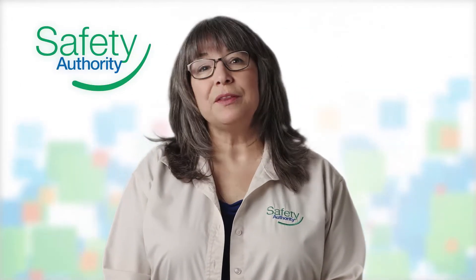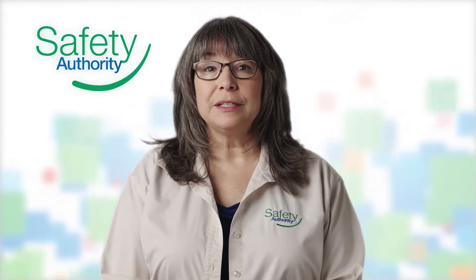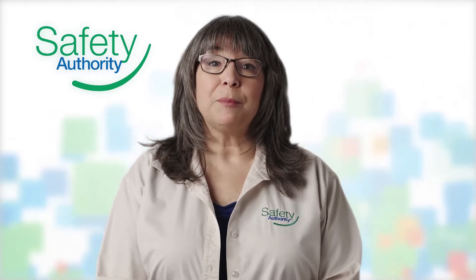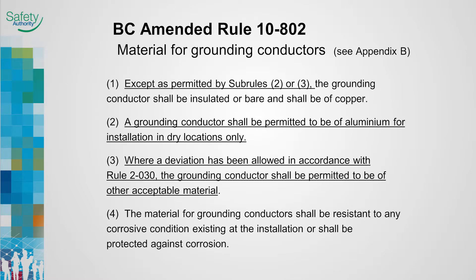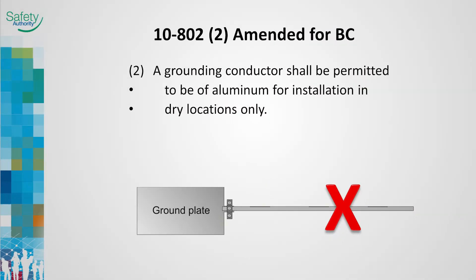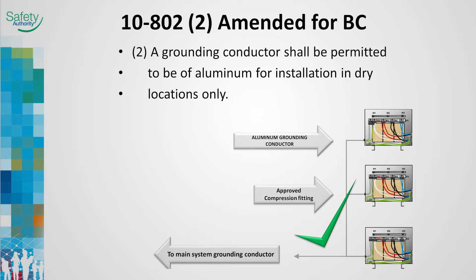Rule 10-802, the amended rule, is written in preferential order. The grounding conductor shall be copper, but when installed in dry locations, it may be aluminum. Sub-rule 3 allows materials other than copper or aluminum by special permission. However, sub-rule 4 states that regardless of the grounding conductor material, it shall have corrosion resistant properties or be protected against corrosion. Aluminum is not acceptable when connected to a ground plate electrode which is direct buried — it cannot be used as a U for ground. It could be used when an in-situ grounding electrode, such as a cold water pipe, is selected. Aluminum would be acceptable in a building where transformers are installed on several floors.